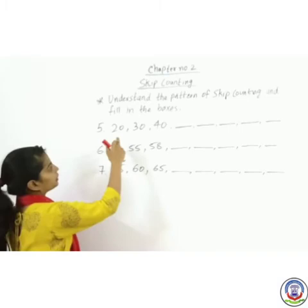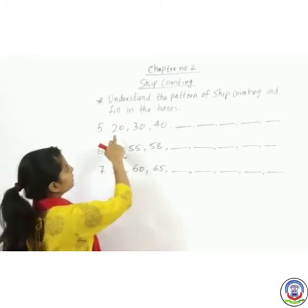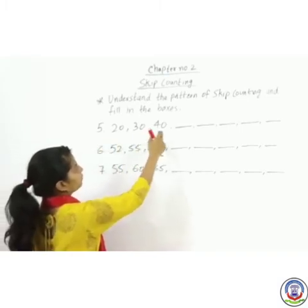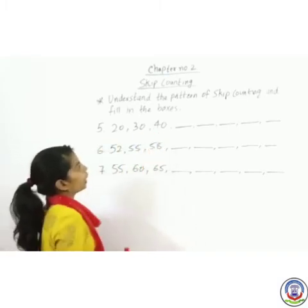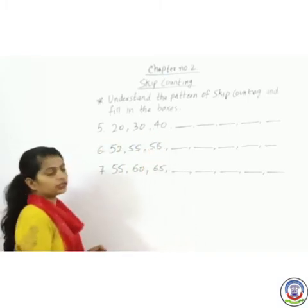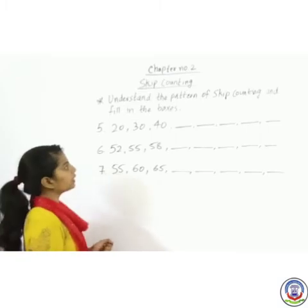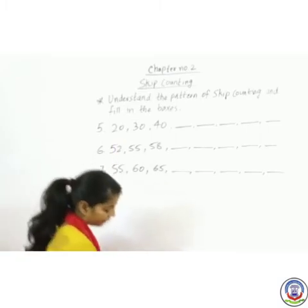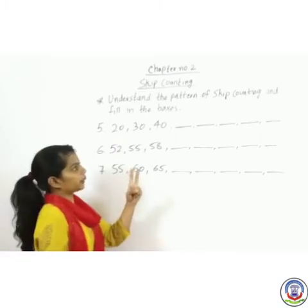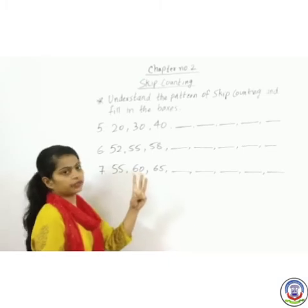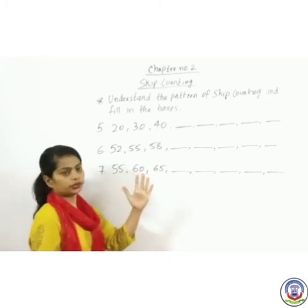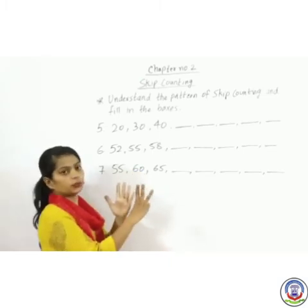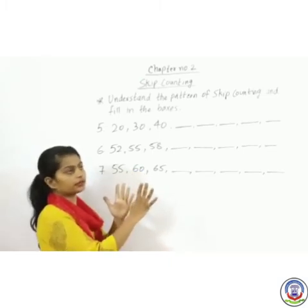Number 5 — the numbers given are 20, 30, 40. We check consistent counting: 21, 22, 23, 24, 25, 26, 27, 28, 29, 30 — so we are skipping 10 numbers each time.